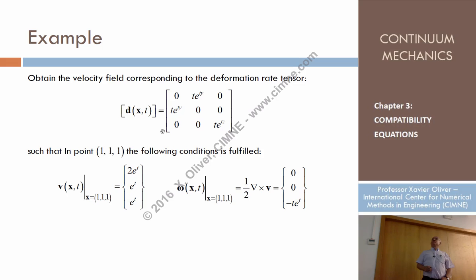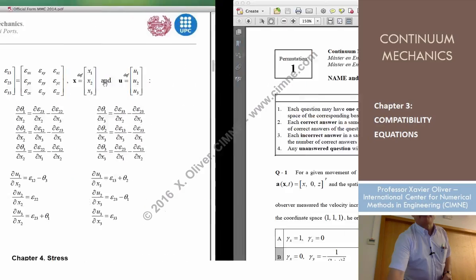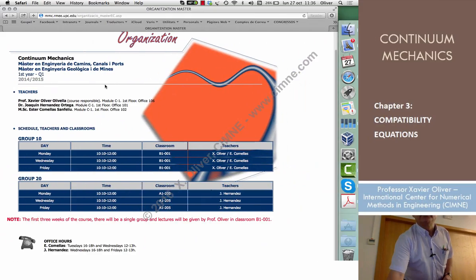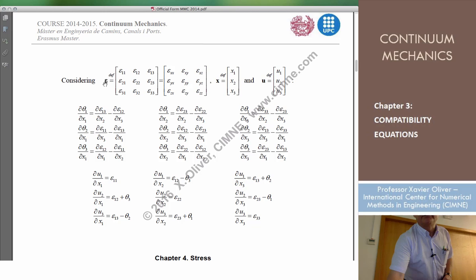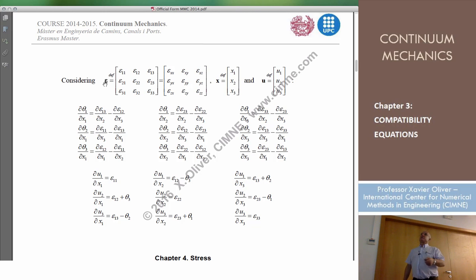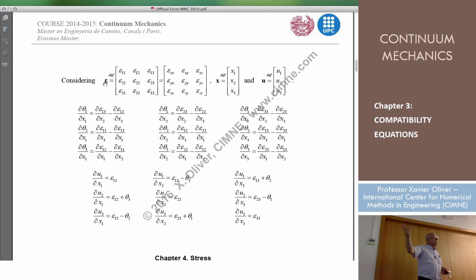We are requested to obtain the velocity field from that. You have to go to the corresponding equations, but now do the translation: D instead of epsilon, V instead of U, and omega instead of theta in these equations.